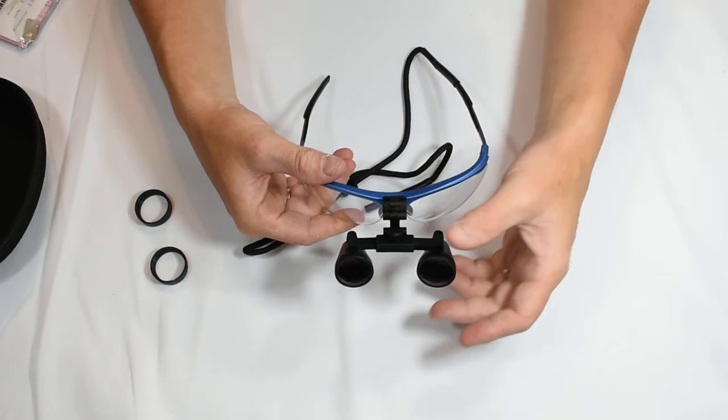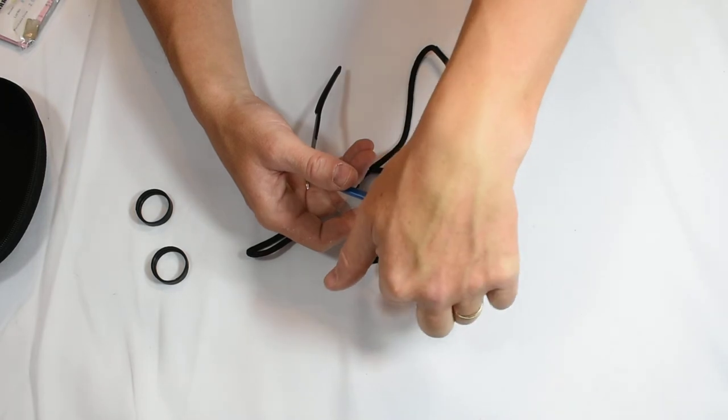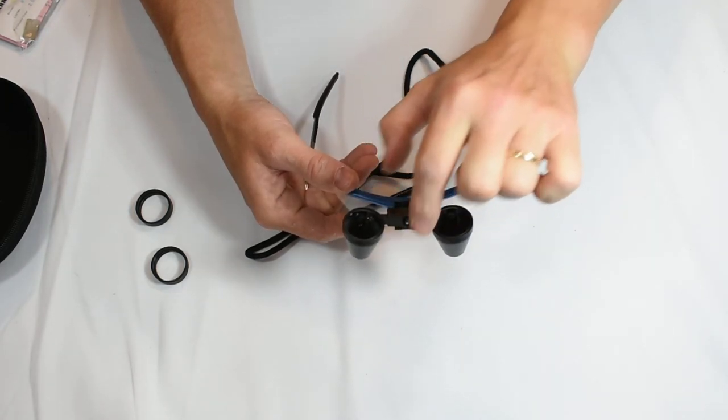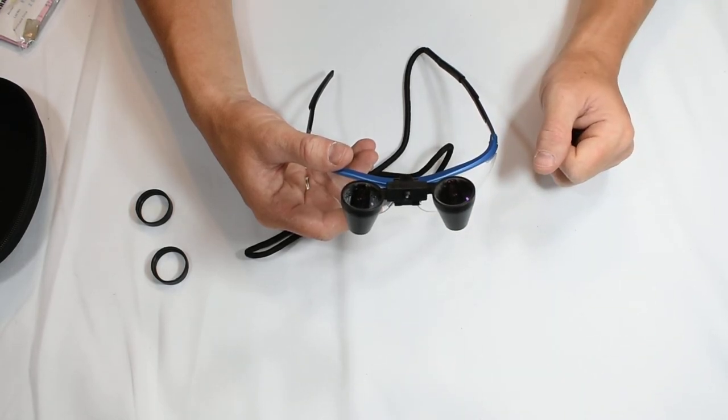Now if I want to look through with magnification then I just flip the loops down and I can see directly through them, but if I no longer need magnification but I still want to wear my safety frames I can flip the loops up out of the way.